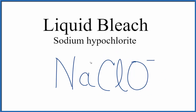Sodium is in group one on the periodic table, so it has a 1+ ionic charge. These charges need to add up to zero to give a net charge of zero: 1+ and 1− adds up to zero. So NaClO is the formula for sodium hypochlorite, liquid bleach.